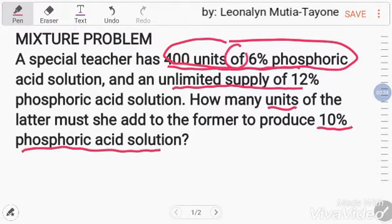400 units of 6%. Multiply that. Unlimited supply times 12%. Add them. To produce, that equals 10% of phosphoric acid.